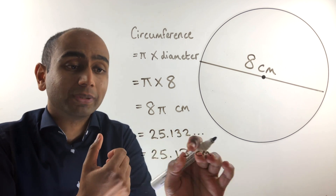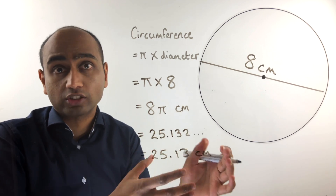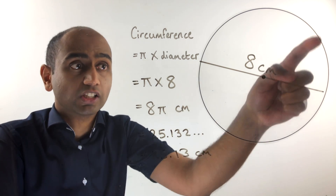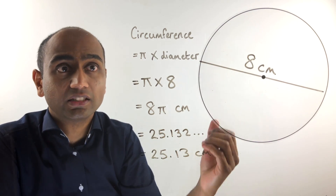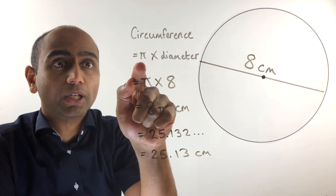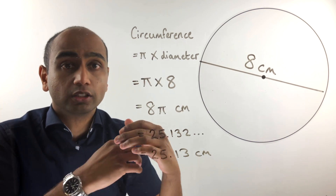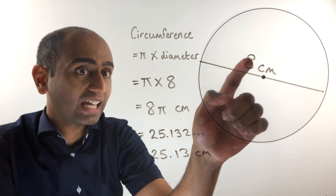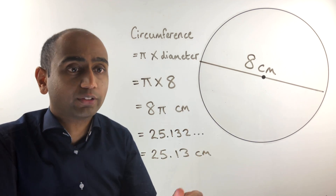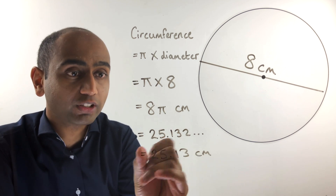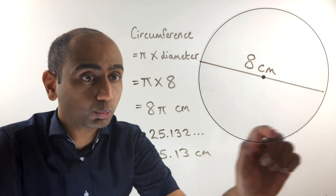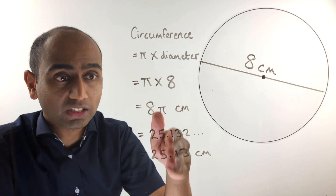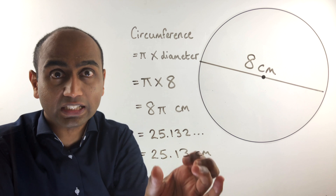Remember you should round to as many decimal places as the question asks for. To summarize: to find the circumference of a circle — the distance all the way around it — simply multiply the diameter by pi. This gives an exact answer, such as 8π, or you can plug it into your calculator for a numerical answer, but since the decimals go on forever you round to however many decimal places you need.